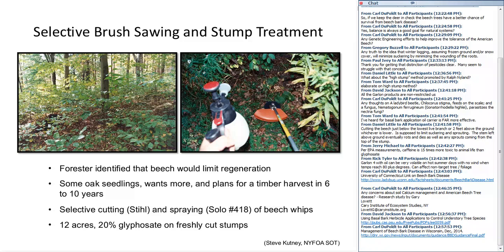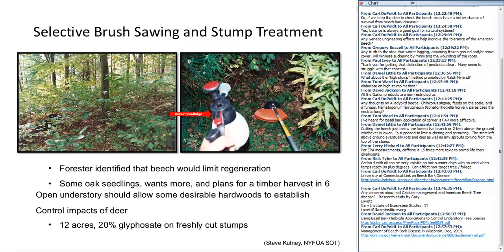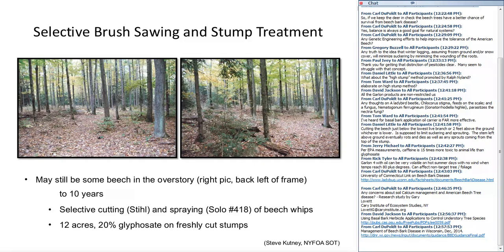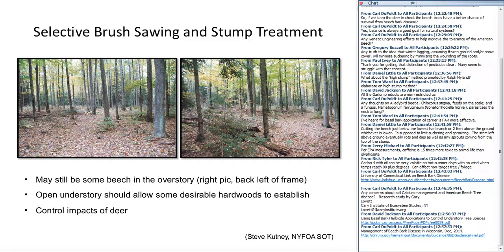Steve used selective cutting with a steel brush saw power saw, then sprayed using the Solo number 418 pressurized pump sprayer — about one liter — which he's able to handle along with the brush saw at the same time. He did about 12 acres using a 20% concentration of glyphosate, cutting a beech stem and then immediately hitting it with the herbicide mixture. The picture on the left is before, and after browning out he has quite a clean-looking understory.